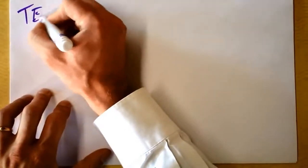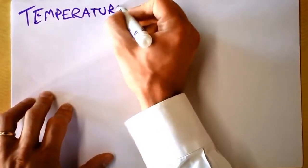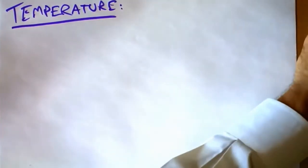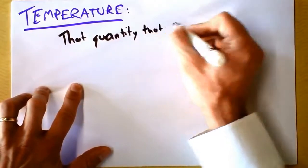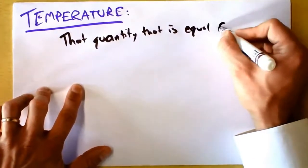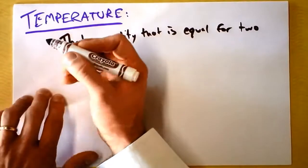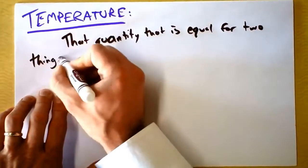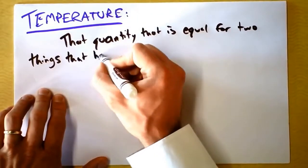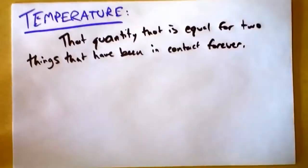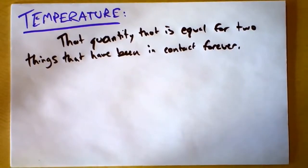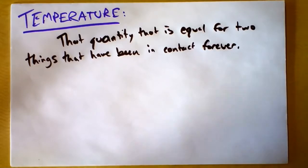You have to do this very carefully, and you'll see how sneaky I am with this. Temperature — we will come back when we know a lot more physics and get a better definition for temperature. But right now all we can say about temperature is that quantity that is equal for two things that have been in contact forever. You don't really have a very practical definition there, but that's all that I can say about temperature.